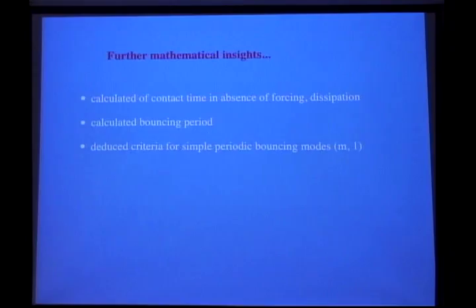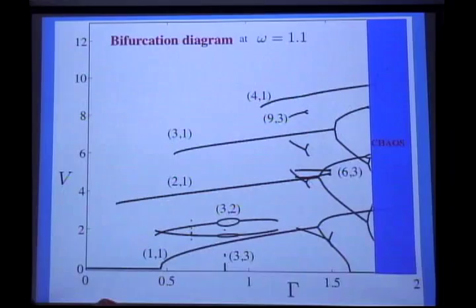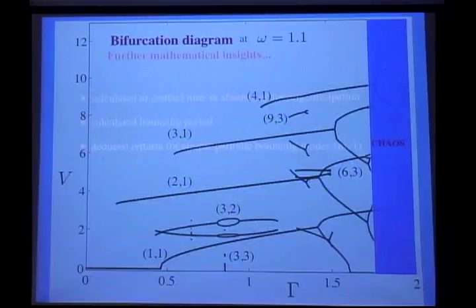One can do other mathematical things because we have such a complete description. We can do a little correction for bouncing period. Here's a bifurcation diagram: the x-axis is the forcing acceleration, the y-axis is the impact speed. Below a certain threshold you can't get bouncing, and then you see the system supporting bouncing solutions beyond this critical value.